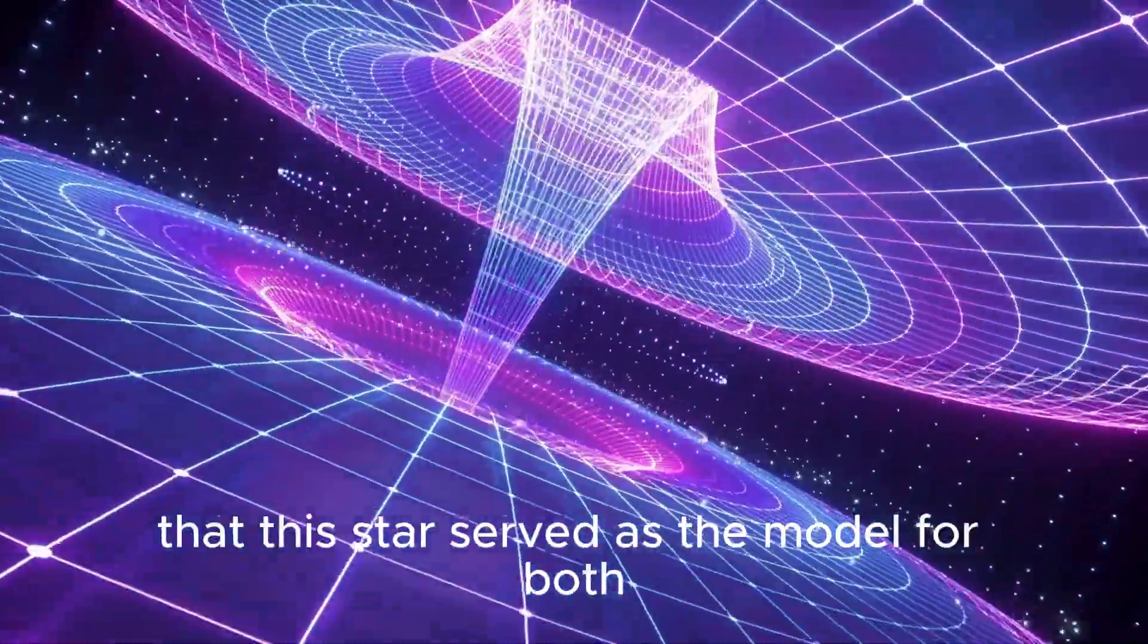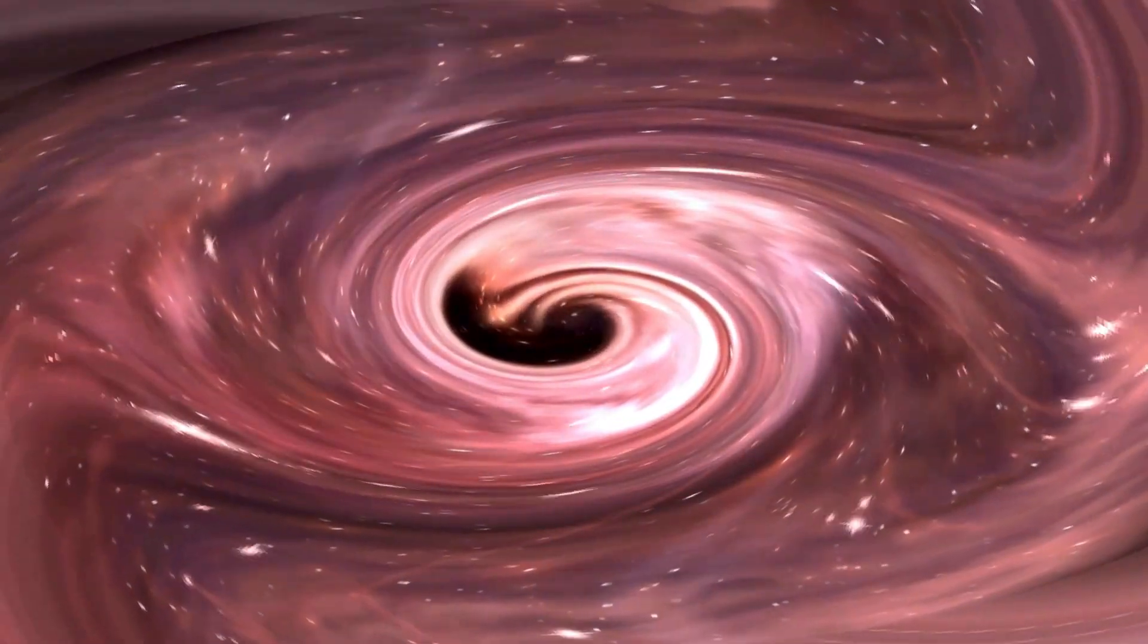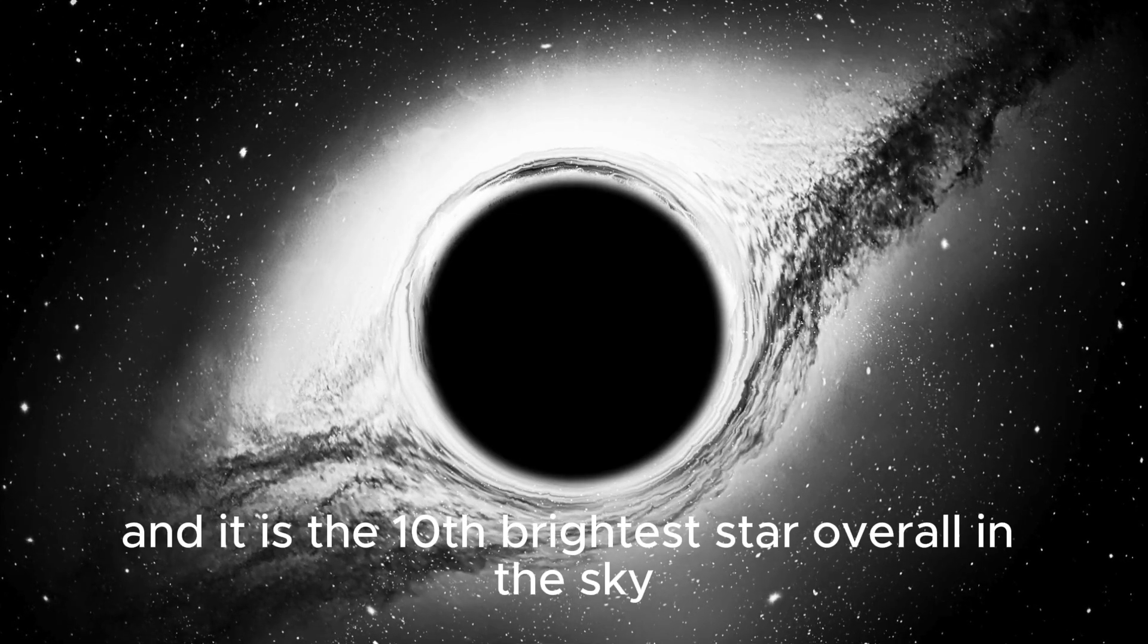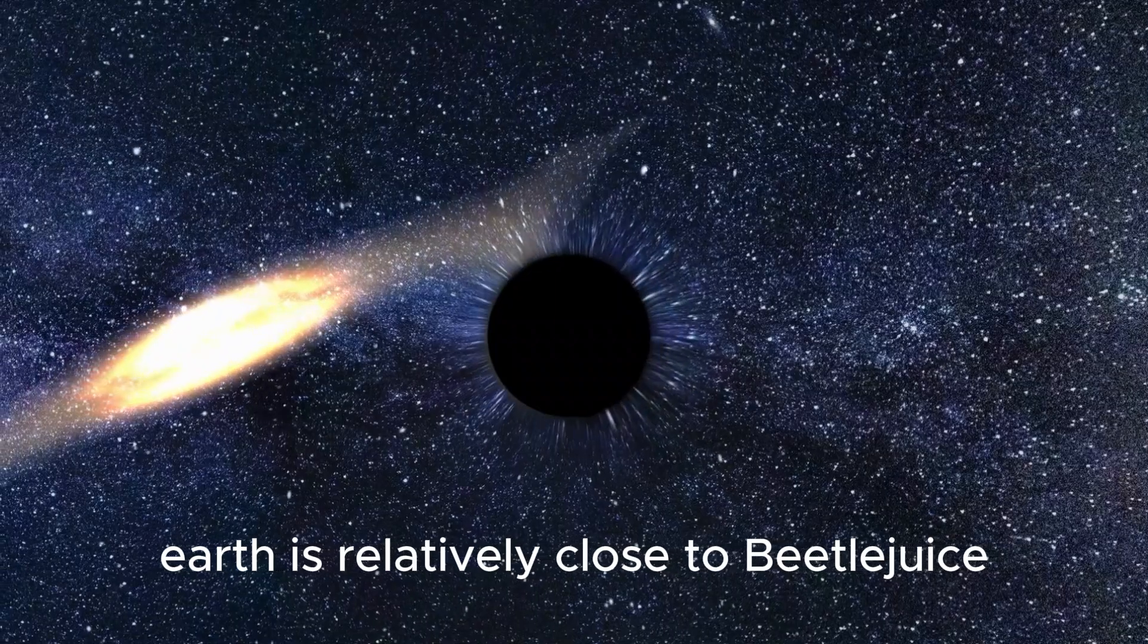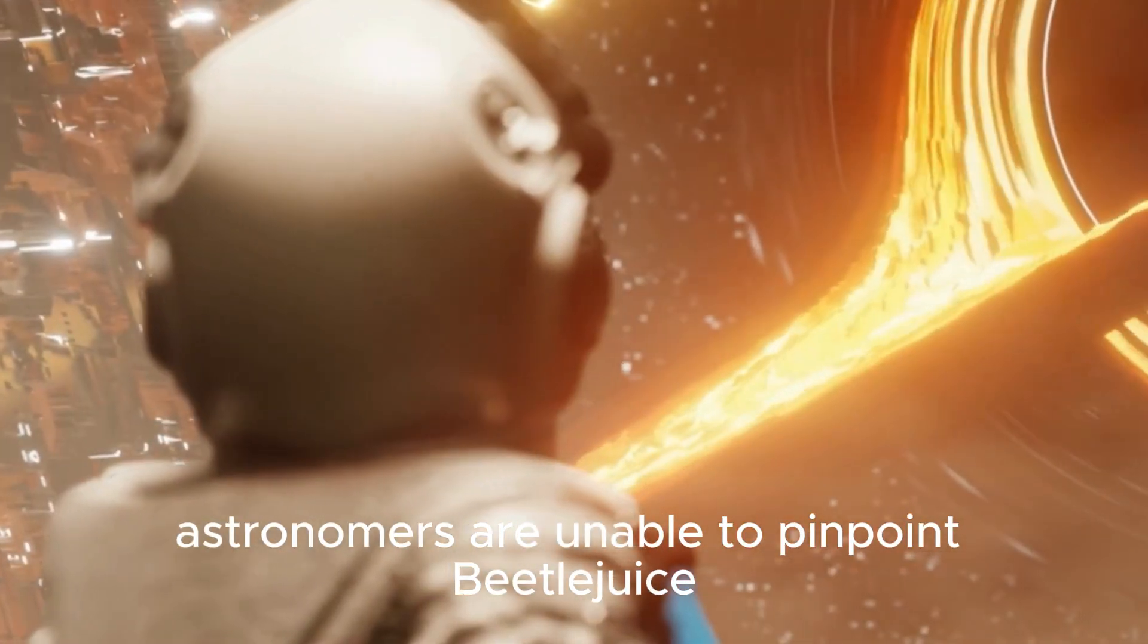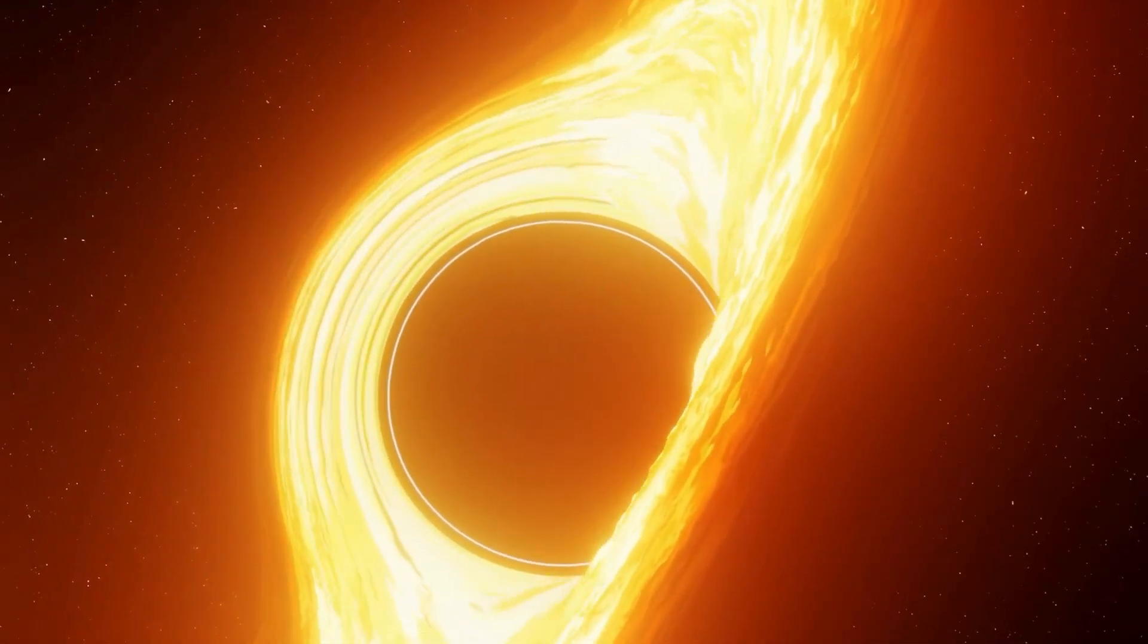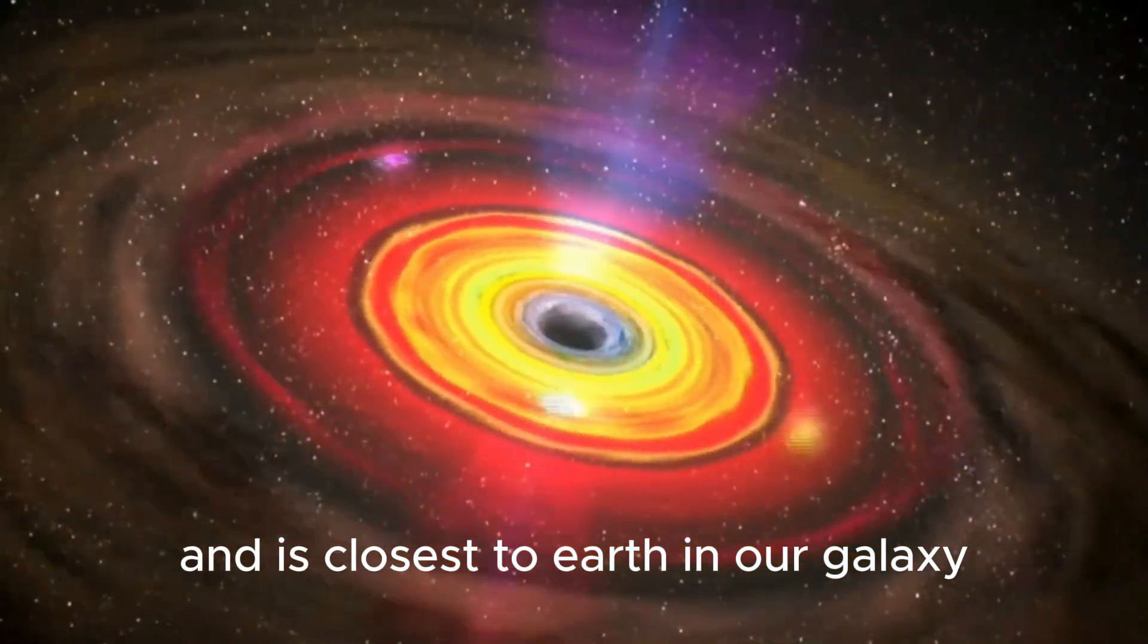It is also one of the most well-known stars. It's noteworthy that this star served as the model for both the character and the movie Beetlejuice. Betelgeuse is the seventh brightest star visible from most of North America, Europe, and Canada, and it is the tenth brightest star overall in the sky. Earth is relatively close to Betelgeuse. Astronomers are unable to pinpoint Betelgeuse's exact distance from Earth, although they believe it to be between 430 and 724 light-years away.